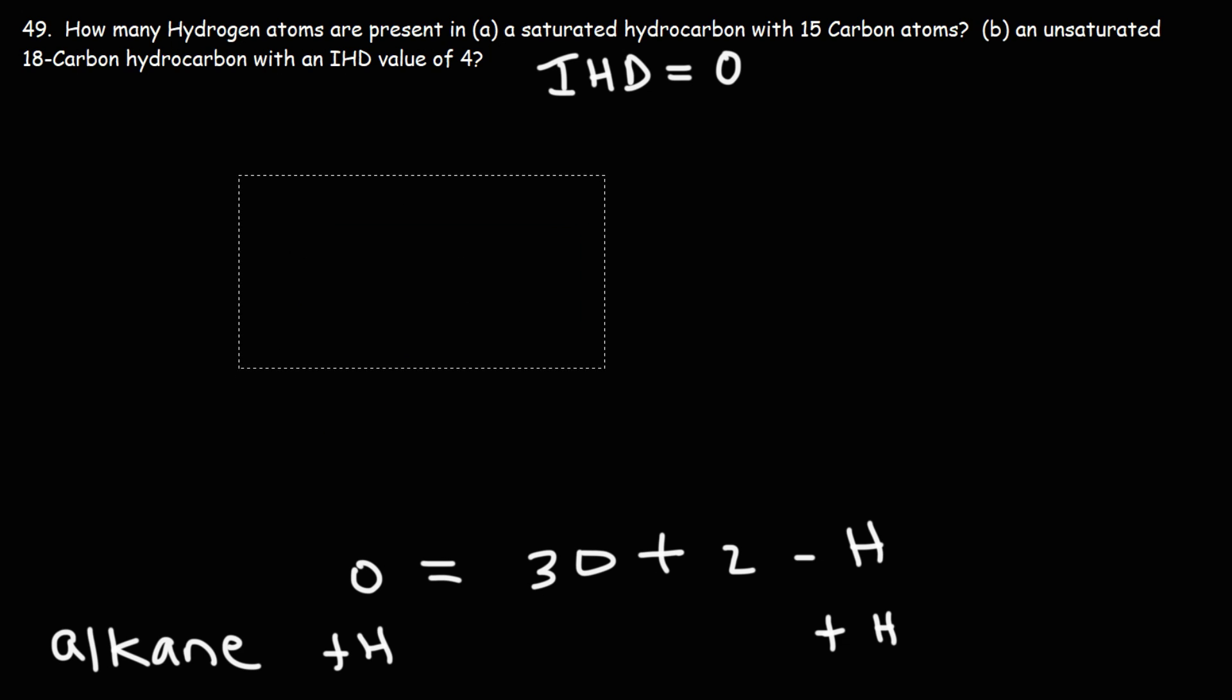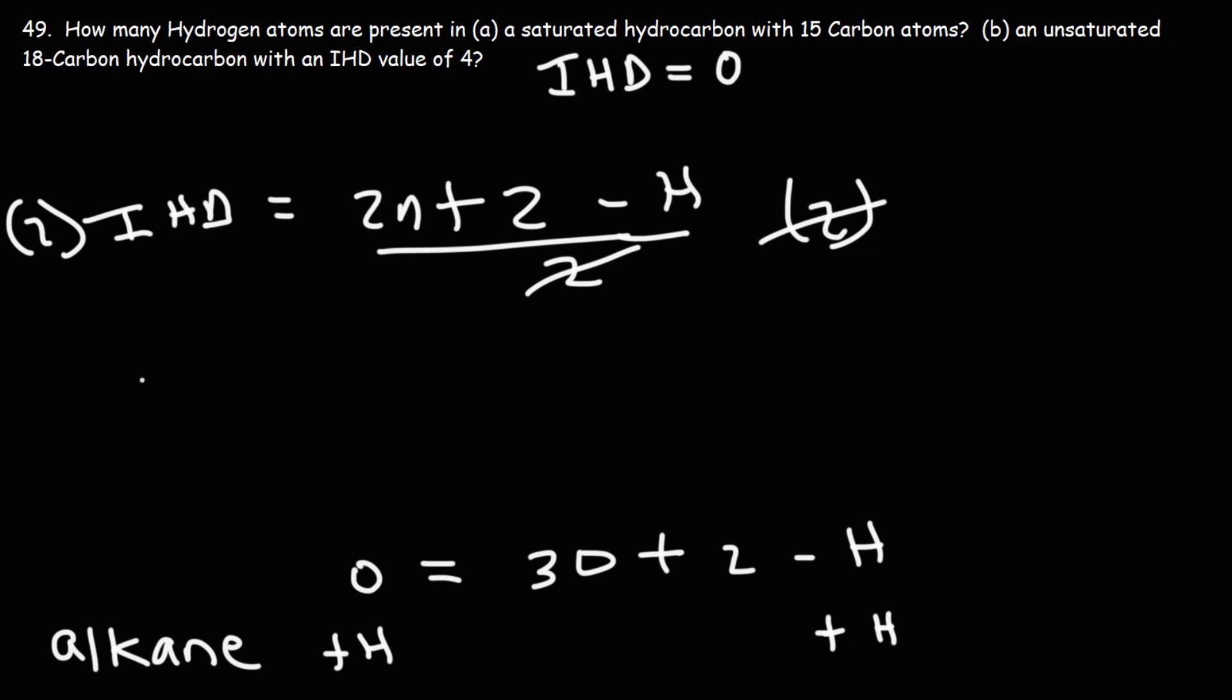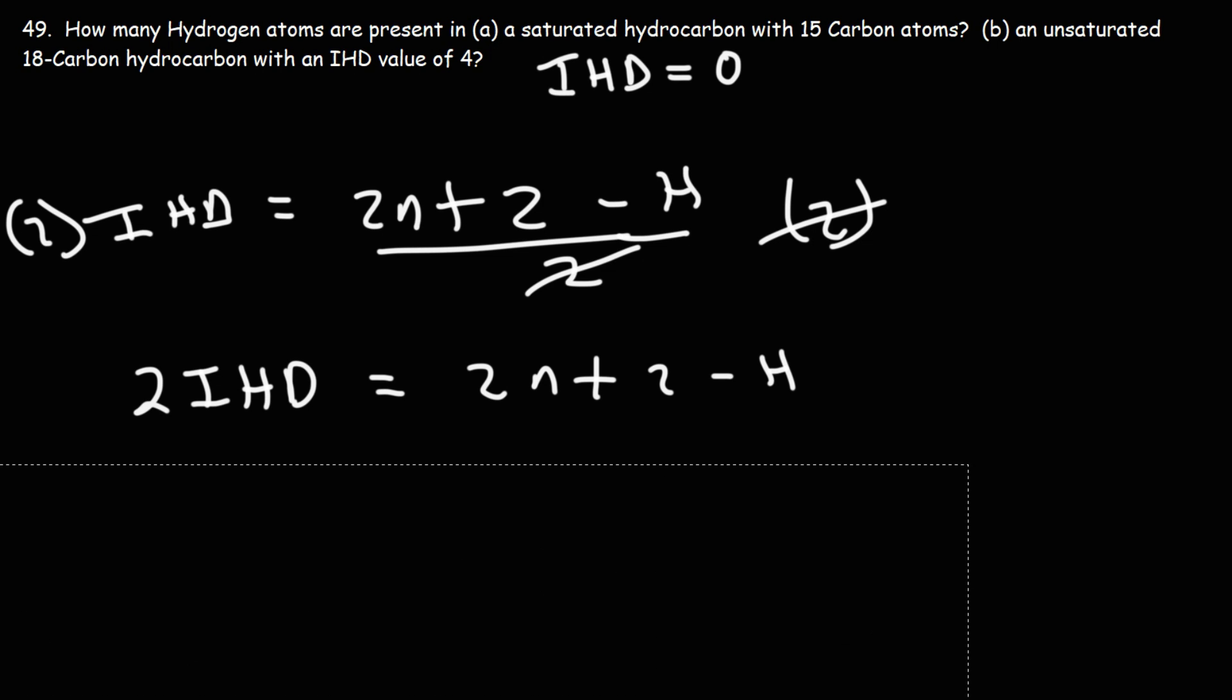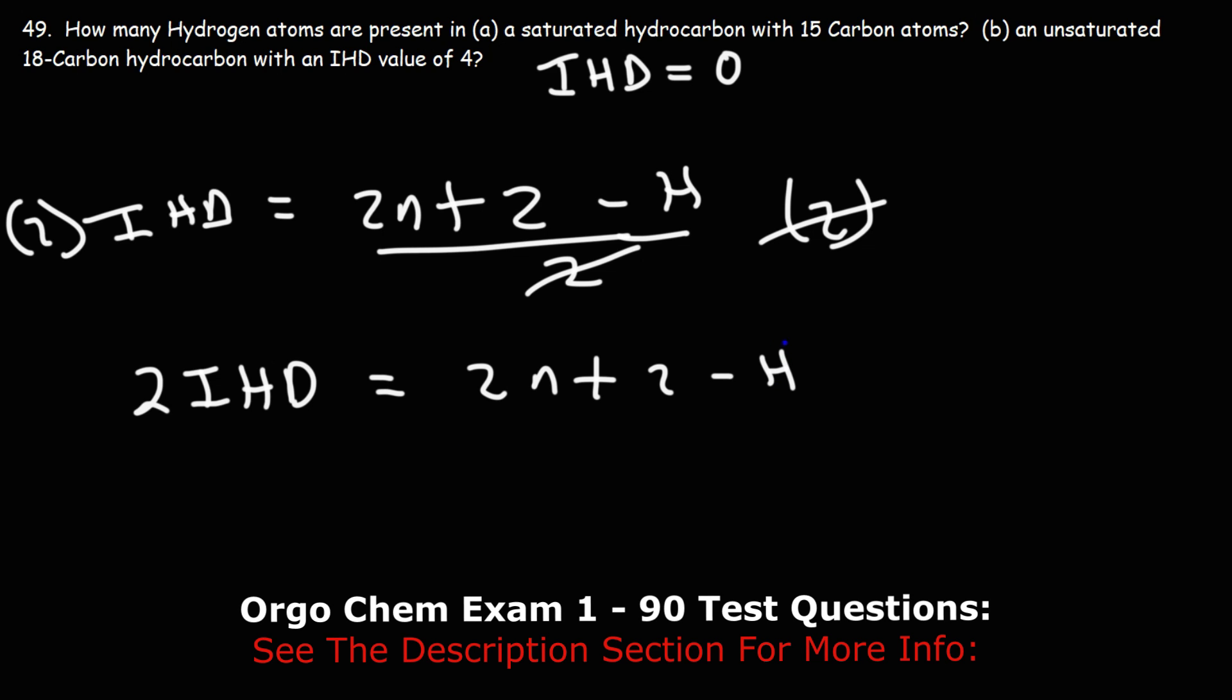Now for those of you who prefer to have a simple formula to get an answer like this, here's what you can do. We're going to rearrange the equation to solve for H. So we have IHD is equal to 2n plus 2 minus the number of hydrogens divided by 2. So to solve for H, we're going to multiply both sides by 2 first. Now what I'm going to do is I'm going to take negative H and move it to this side. And I'm going to take the 2 IHD, move it to that side.